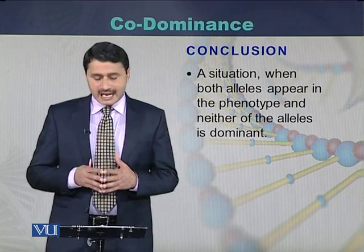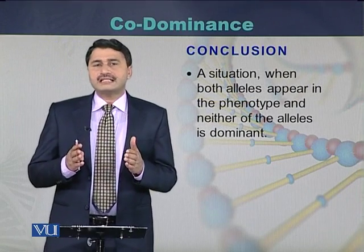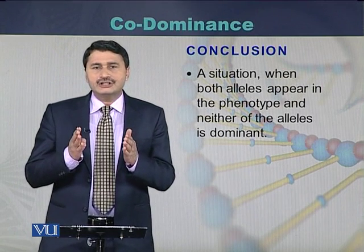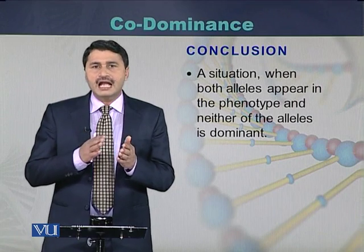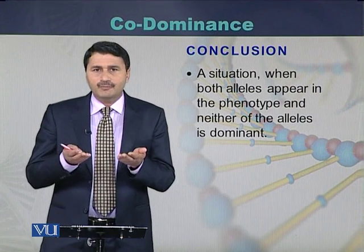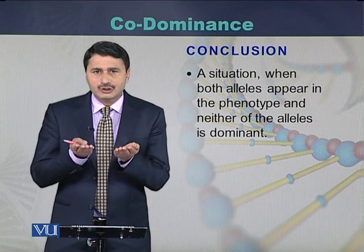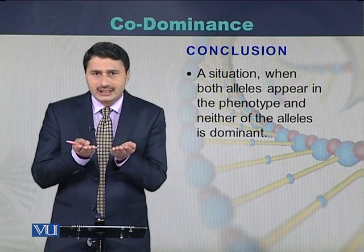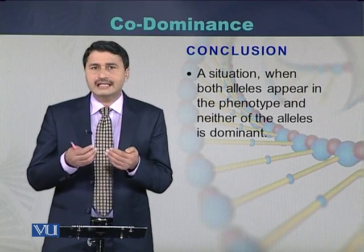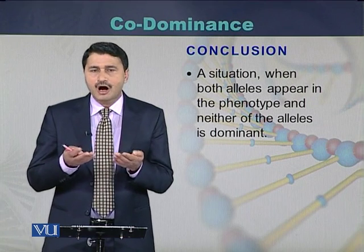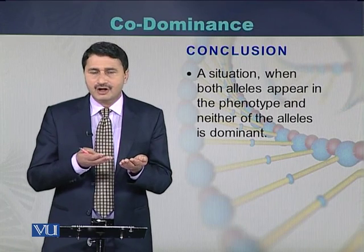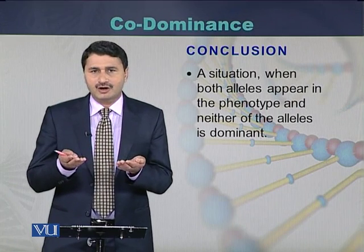In conclusion, codominance is a phenomenon where both alleles show parallel behavior and neither allele is dominant over the other. Both alleles show their expression in a heterozygous condition, as seen in human blood groups, roan cattle, and the cross between gray and white horses.